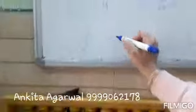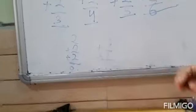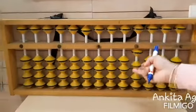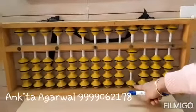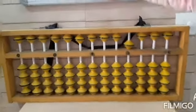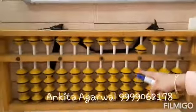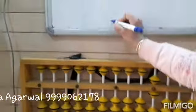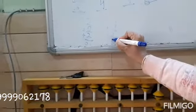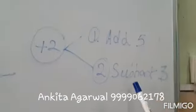Now one more question: 3 plus 2 plus 1. This is 3: 1, 2, 3. Now I want to add 2, but there is only 1 bead left. So I will add 5 and subtract 3: 1, 2, 3. Now after adding 2, I have to add 1, and I can directly add 1. The answer is 6. So first check if you can add the beads directly; if not, follow the 2 steps: add 5 and subtract 3.